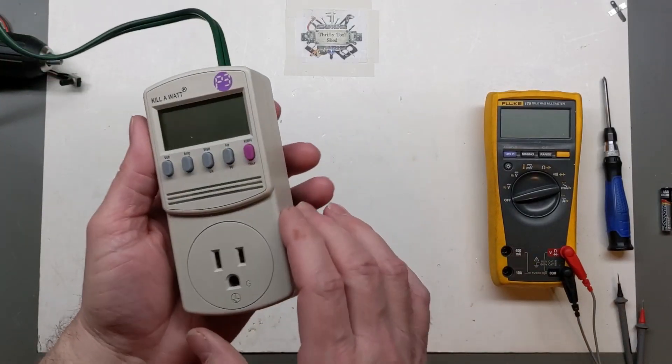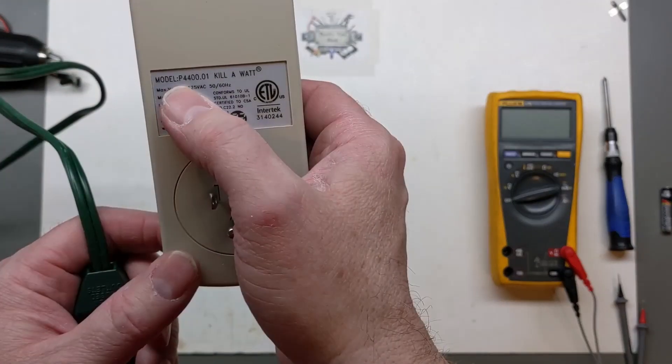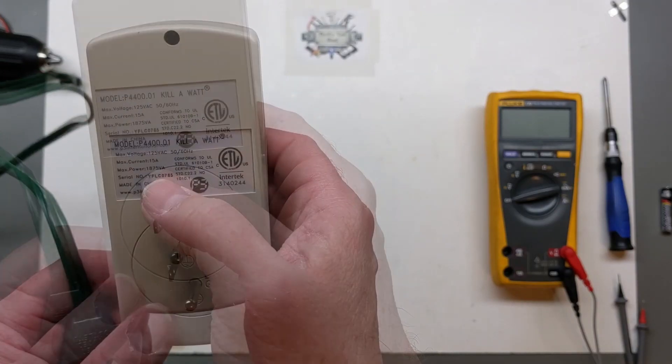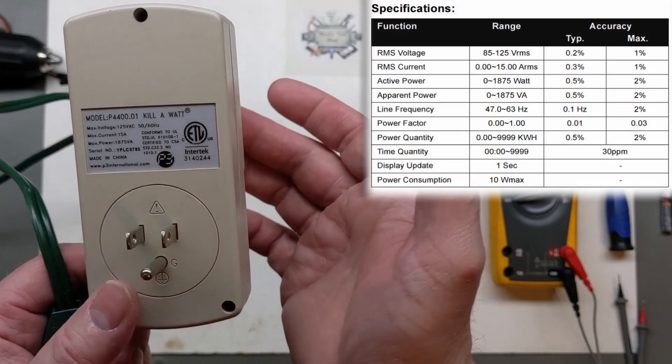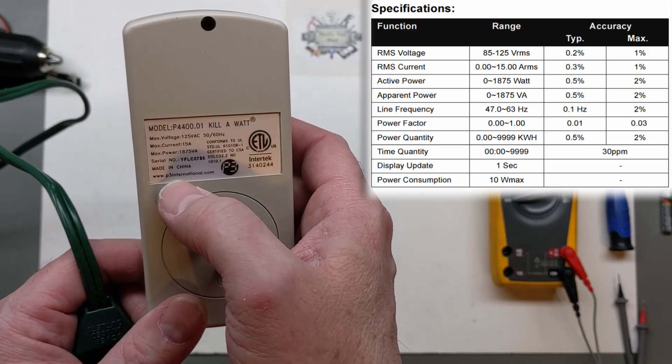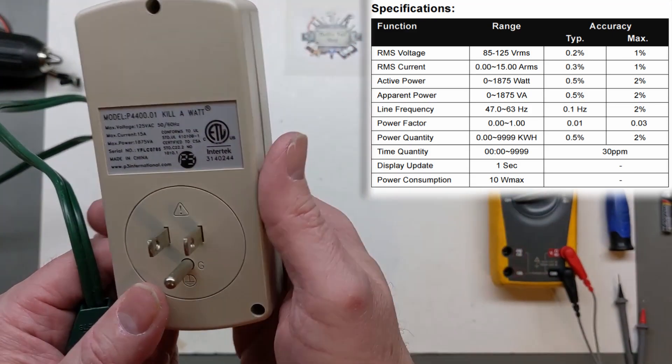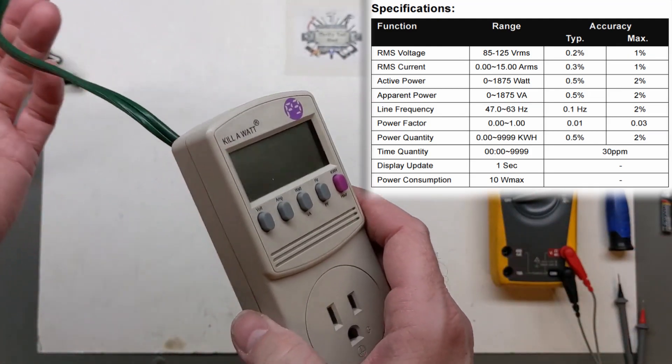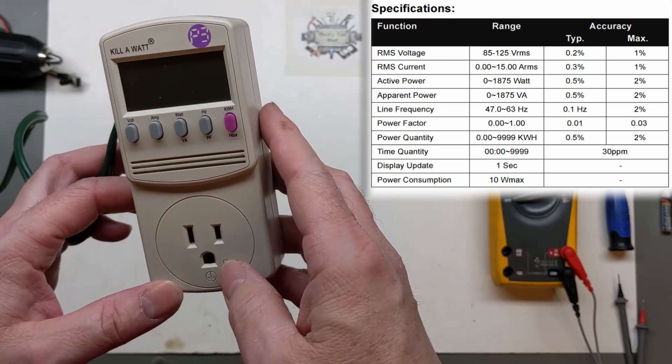Well hey guys, today on the bench we have this Kill A Watt, model number P4400.01. This can handle up to 15 amps through it and it's made by P3 International. I've had this thing for quite some time, maybe even 10 or 12 years, and it is RMS so it works good on checking your voltage, current, your wattage, and your kilowatt hours of use on a device.